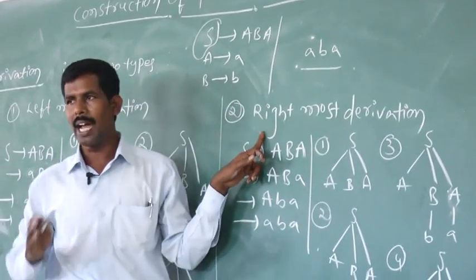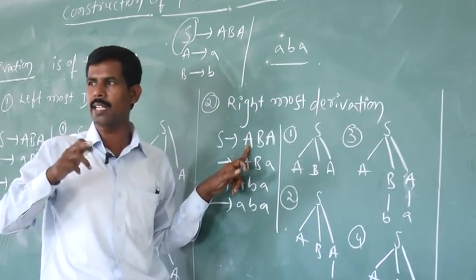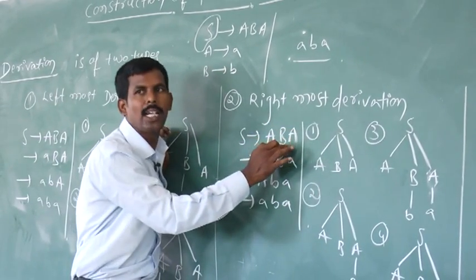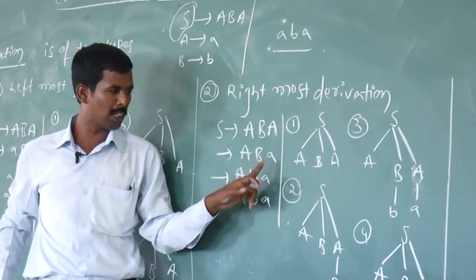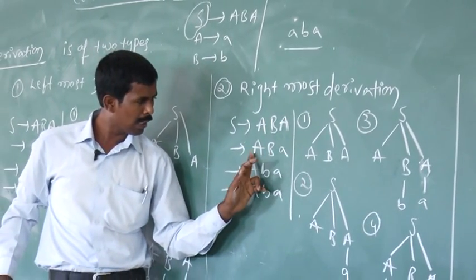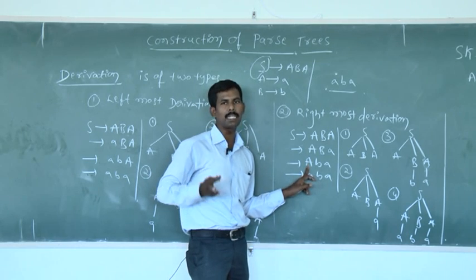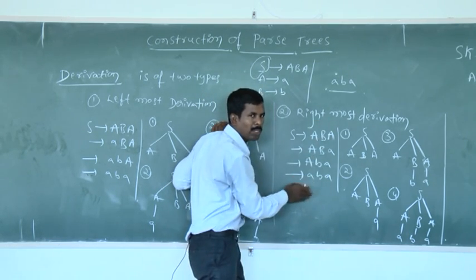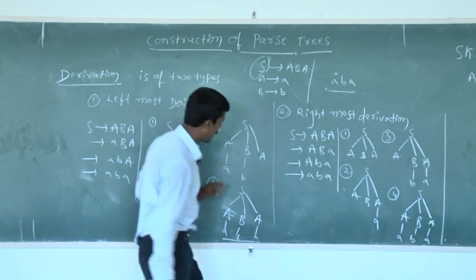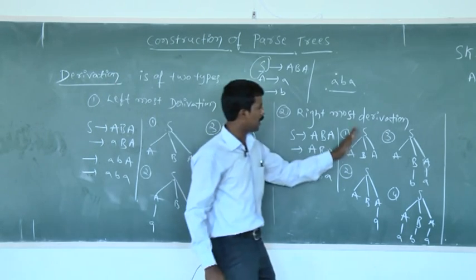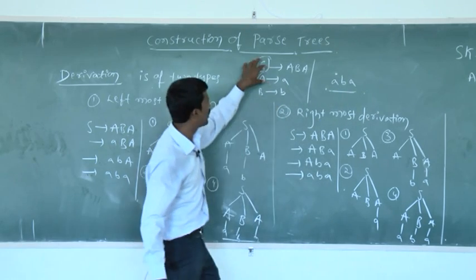Coming to the rightmost derivation: it is the same as the leftmost derivation, but instead of replacing the leftmost non-terminal on the right side of the production, we substitute the rightmost non-terminal first. So starting from S → A B A, the rightmost non-terminal A is replaced first with a, giving A B a. In the next step, B is now the rightmost non-terminal and is replaced with b, giving A b a. Finally, A is replaced with a, giving the string aba. According to these substitutions we construct a parse tree. Finally, we get two parse trees: one constructed with the leftmost derivation and the second constructed with the rightmost derivation. The string is aba and that is the grammar. Thank you.